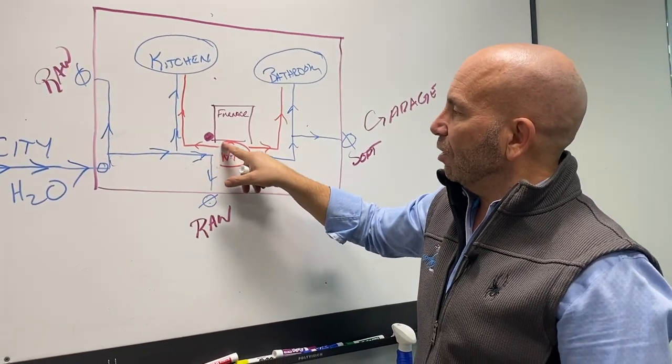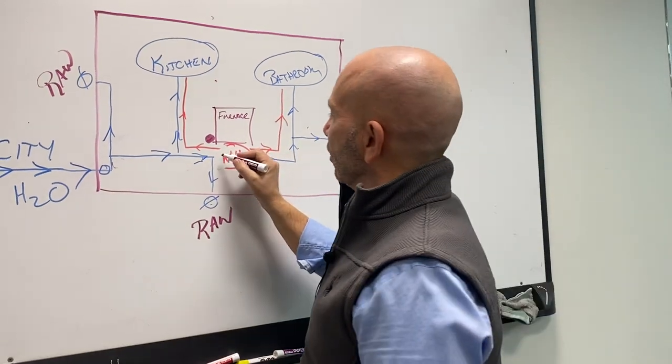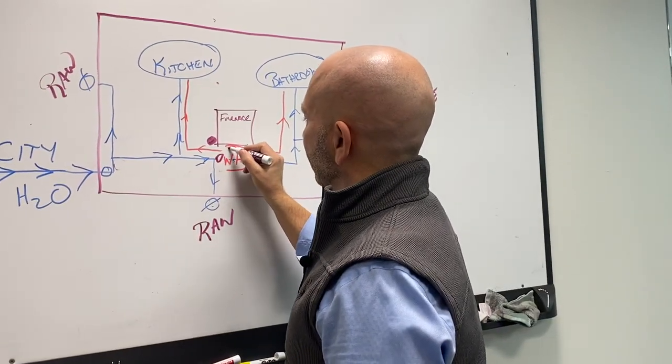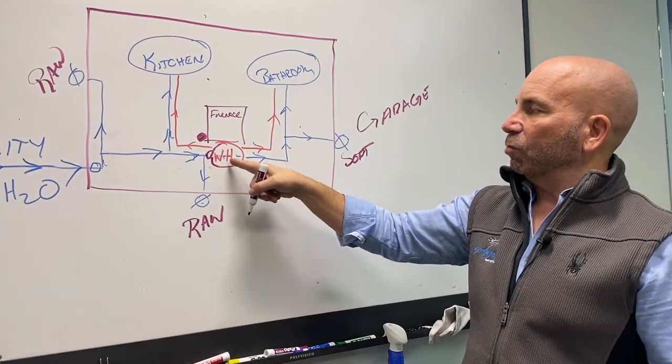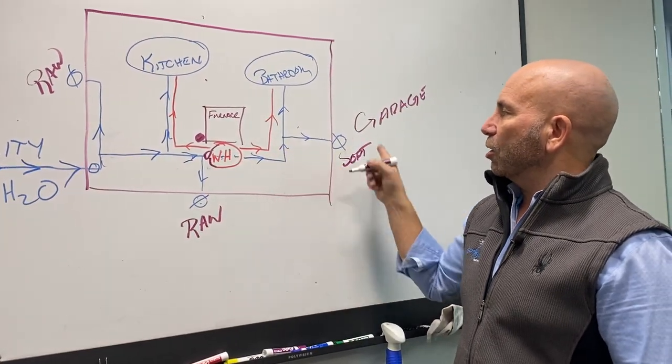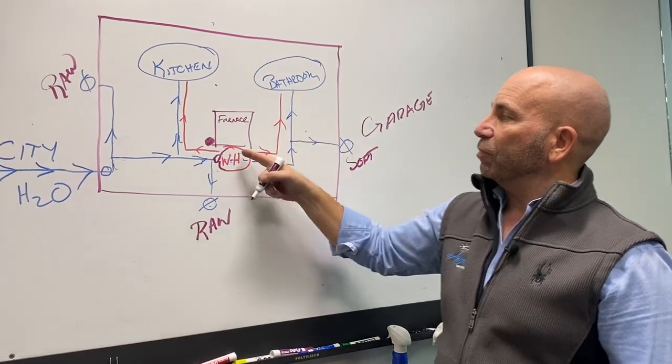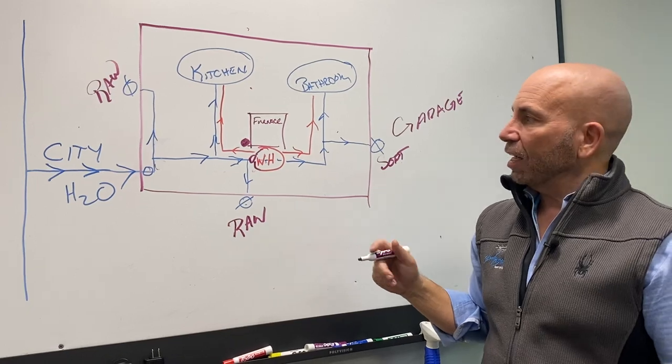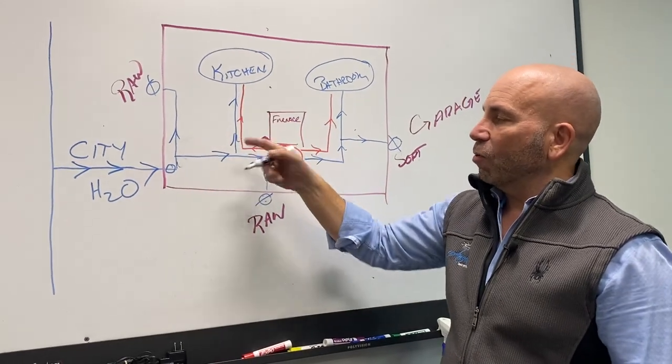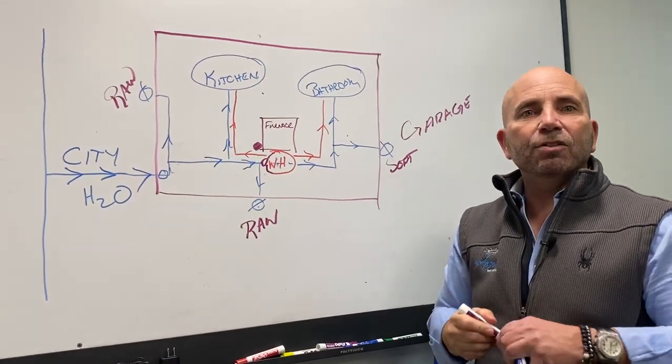So in theory, we need to install it right here before the water heater. We need everything after that, water going into the water heater, going to the garage, going to the bathroom, coming back. Oh wait, what are we going to do? Wow, look at that. We will have this on raw water. So what do we need to do?